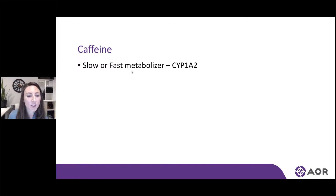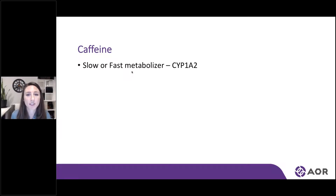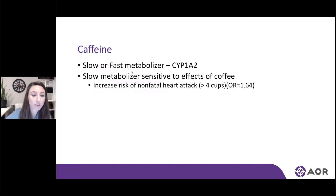If someone is a slow metabolizer and they're drinking more than four cups of coffee a day, we actually see an increased risk for cardiovascular disease. As caffeine is consumed, if you're a slow metabolizer, the caffeine has longer to have an effect on the body. This can increase the risk of non-fatal heart attack by 64%, which is pretty significant. It also affects how we're processing chemicals found in our food, particularly with meat. Studies show that high intake of processed and smoked meat can influence risk for colon cancer, but only for those who have the fast version of the gene that affects caffeine metabolism.